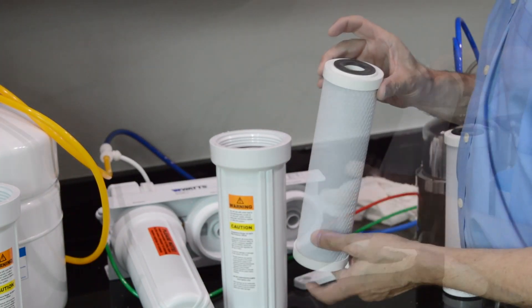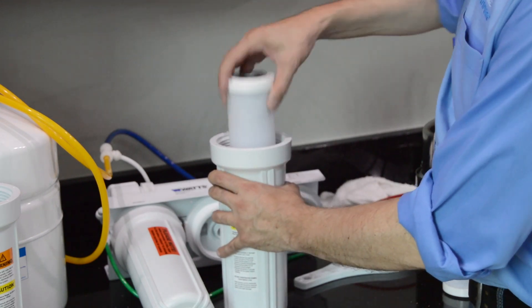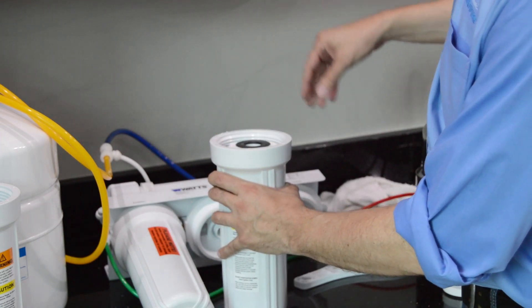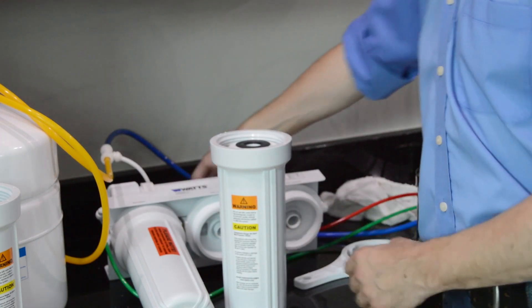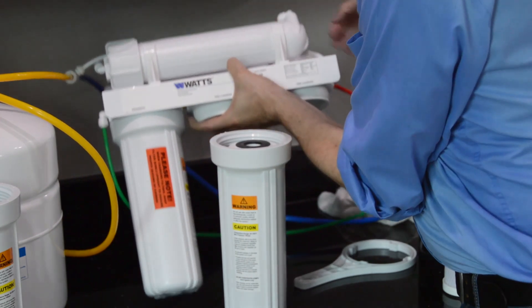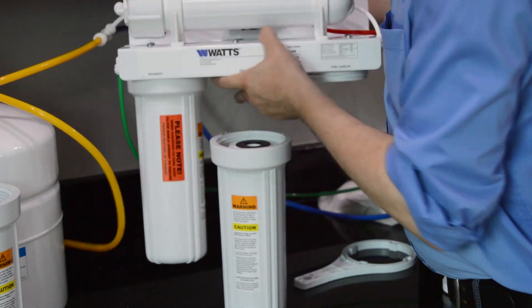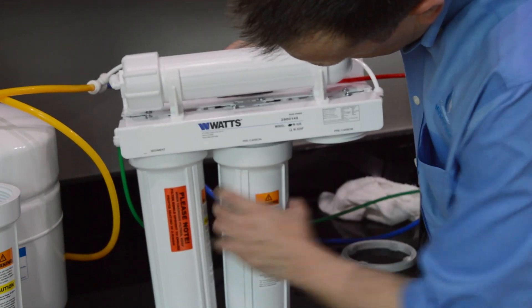Insert a new carbon block pre-filter, making sure to align the filter hole with the housing nipple. Reconnect the filter housing to the system.